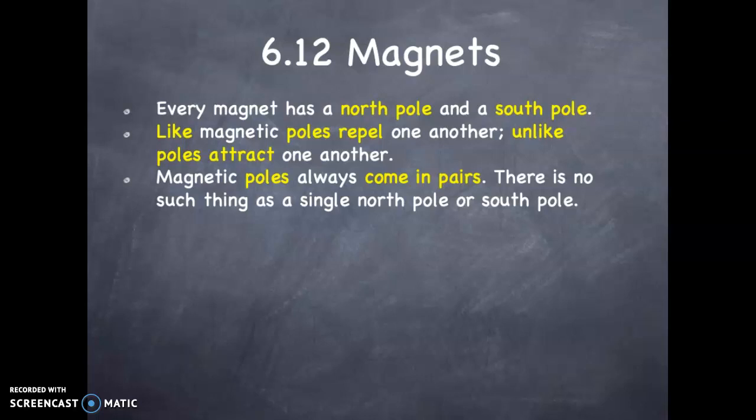Every magnet has a north pole and a south pole. We do not have a means of separating and isolating poles. Like poles repel one another, unlike poles attract one another. Magnetic poles always come in pairs, never single. There is no such thing as a single north pole or south pole.